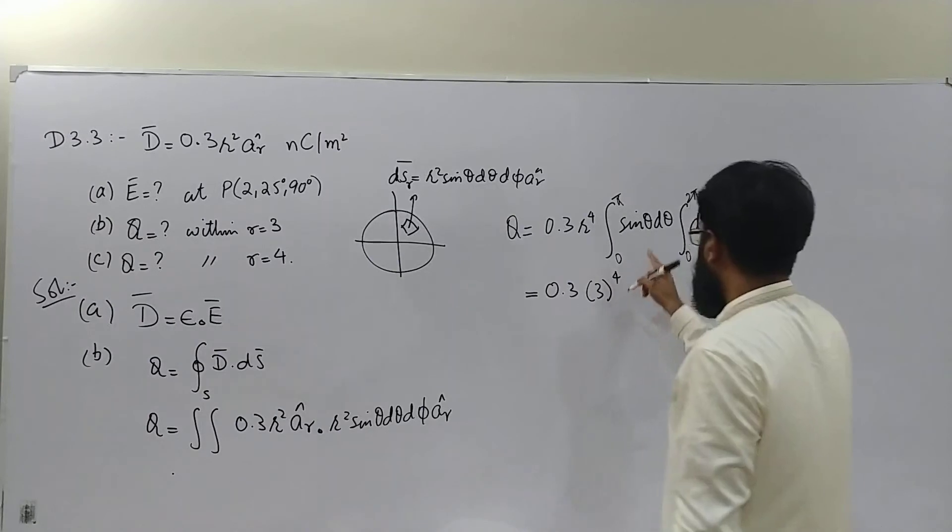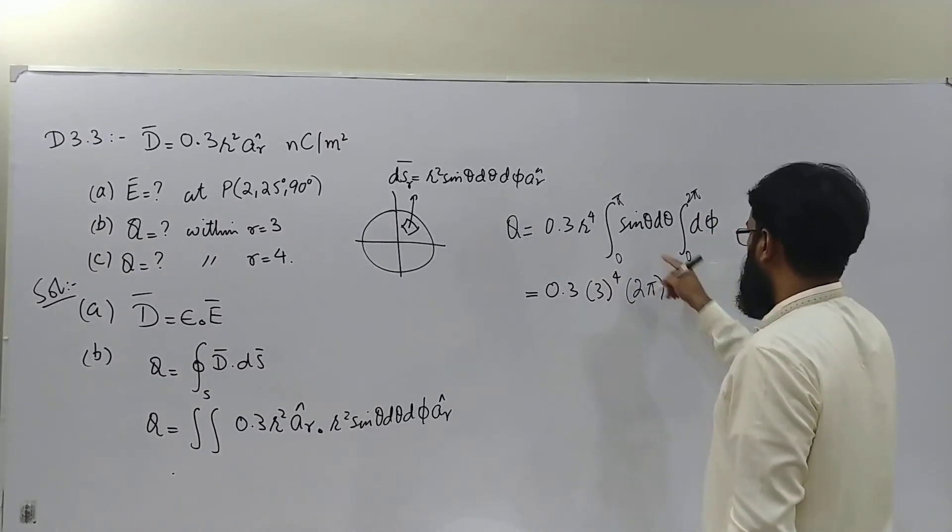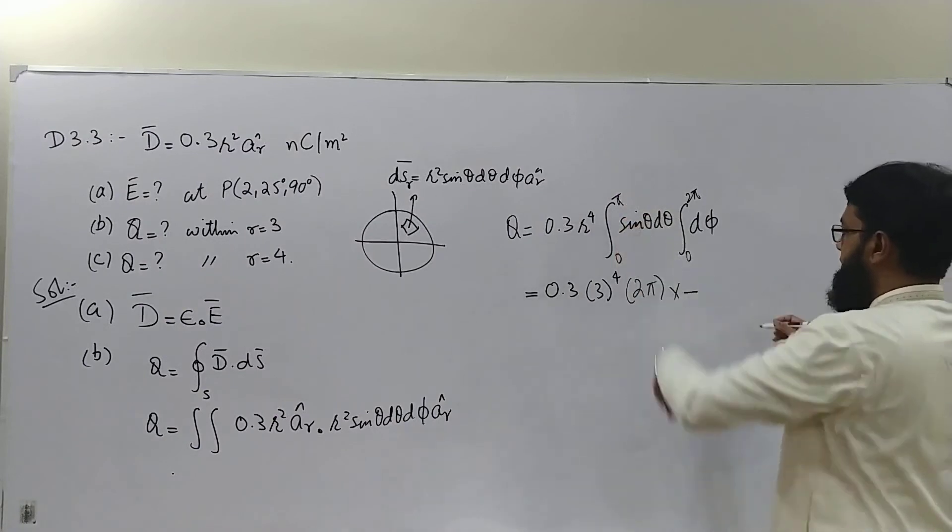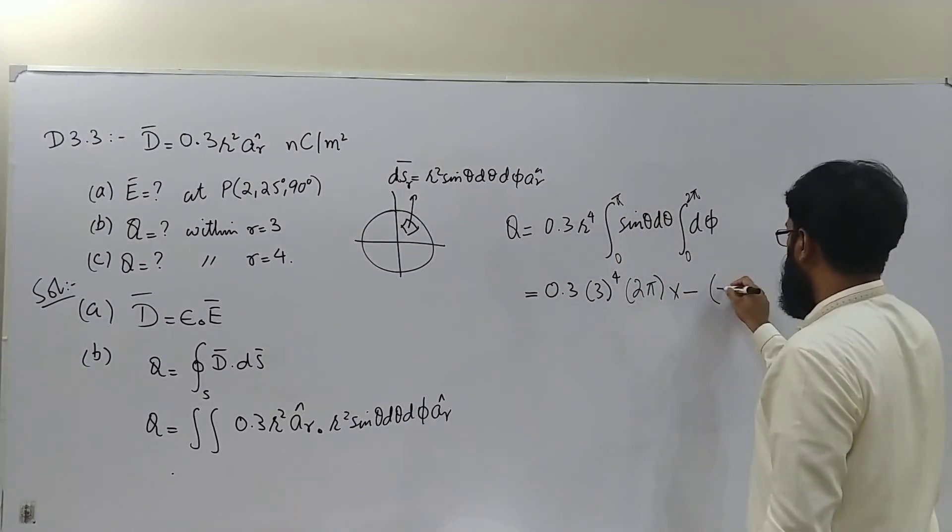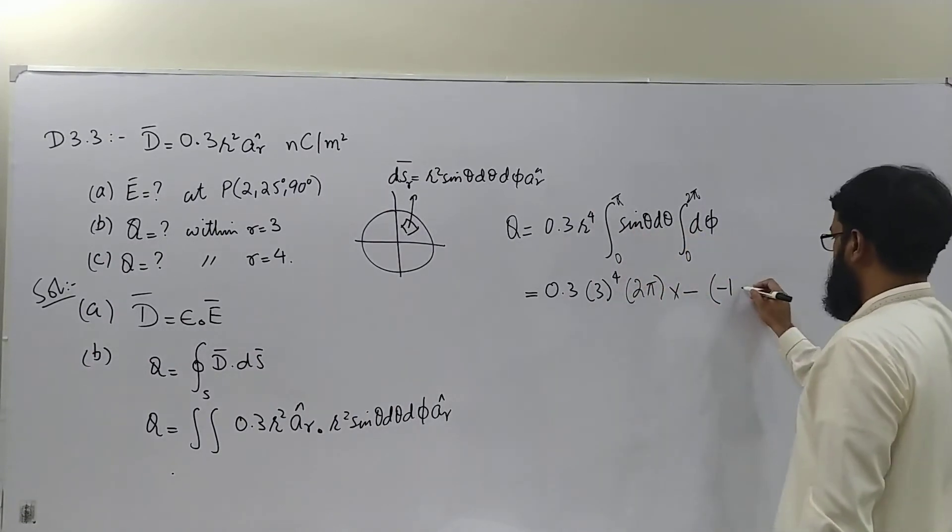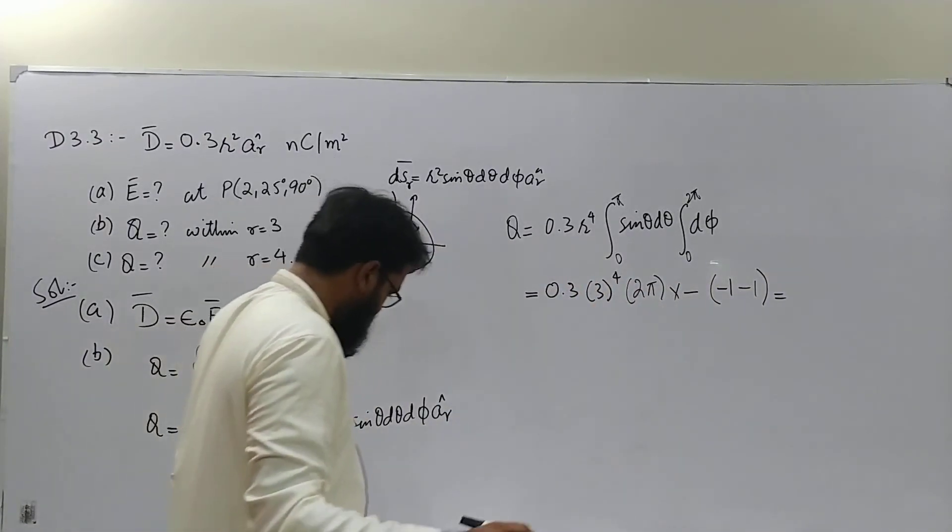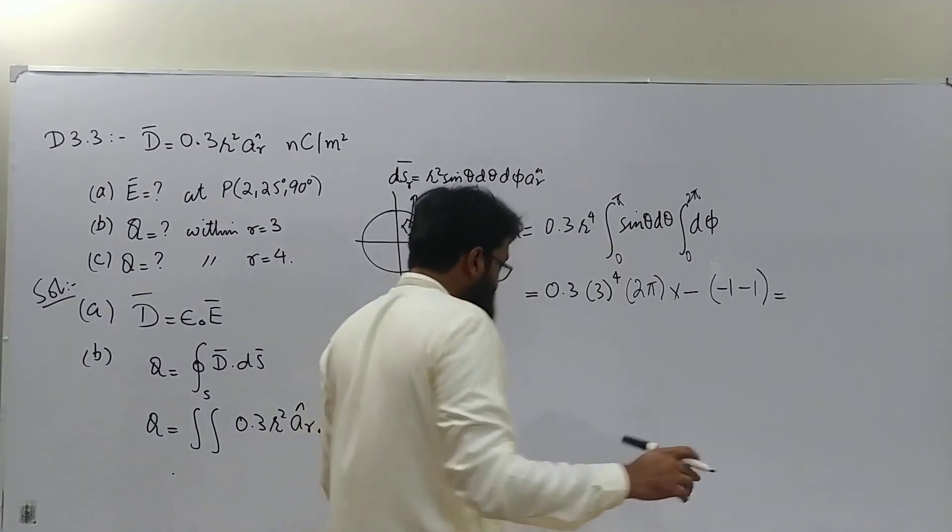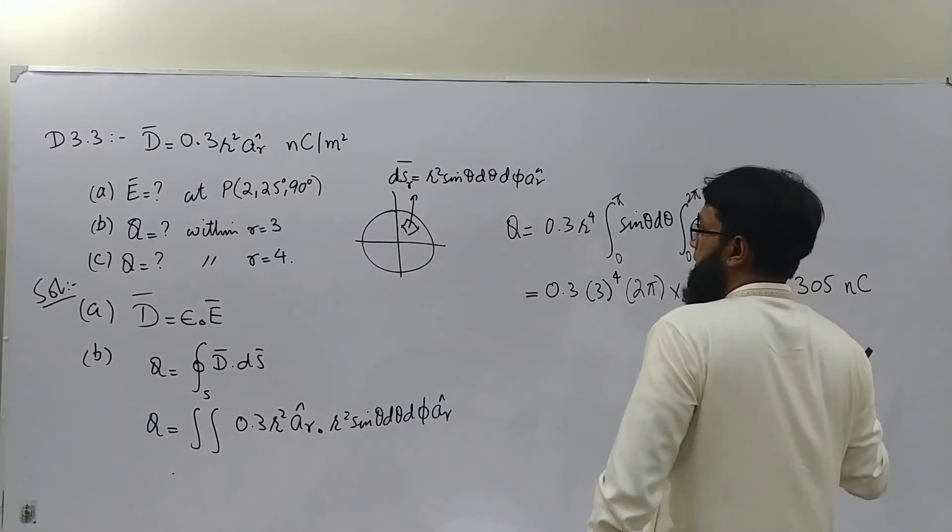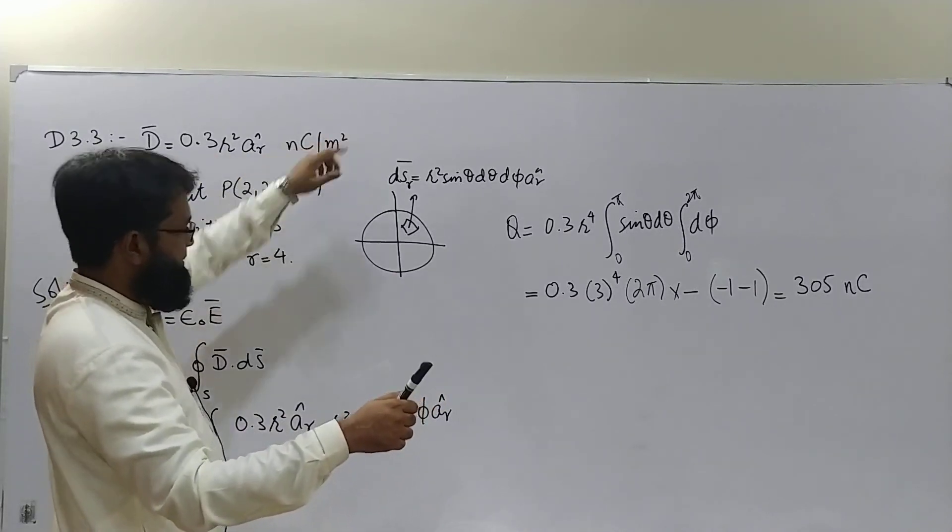Raised to 4, this will be 2 pi minus 0. If you integrate this you will get minus cos theta. Put the limits: cos pi is minus 1, and minus cos 0 is minus 1 again. If you solve this you will get the answer which is 305. Watch out for the units: nano coulombs, because D was given in nano coulombs per meter square.